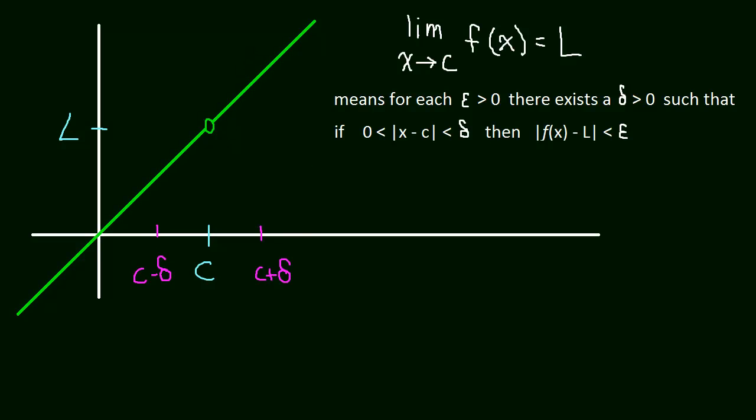Now, what does this zero here mean? That just means that x can't equal c. Because if x equaled c, then you'd have x minus c equal zero. Of course, because if x is equal to c, if you subtract them, that will equal zero. But we're saying that it can't be zero, it has to be greater than zero.